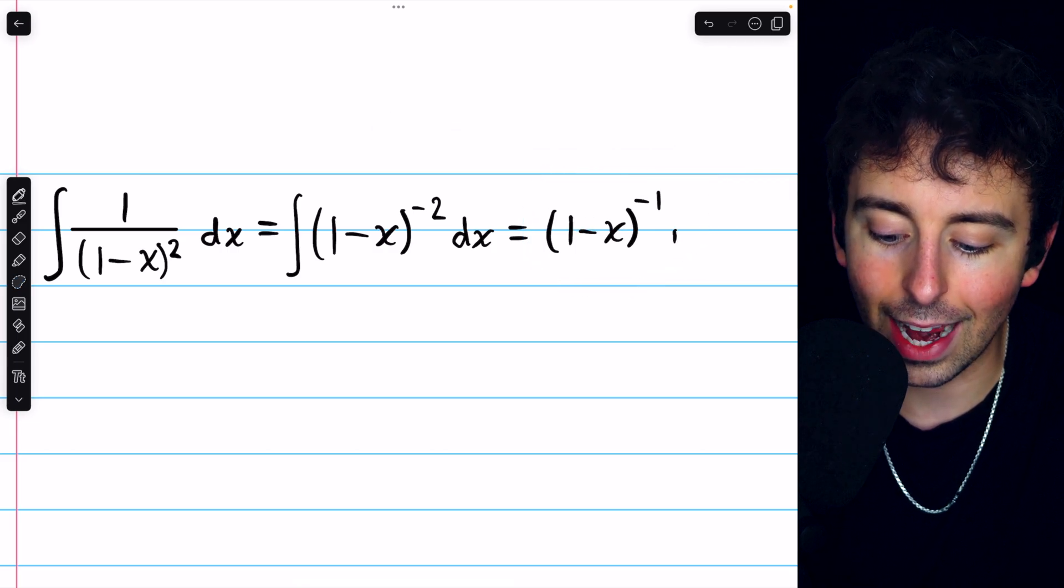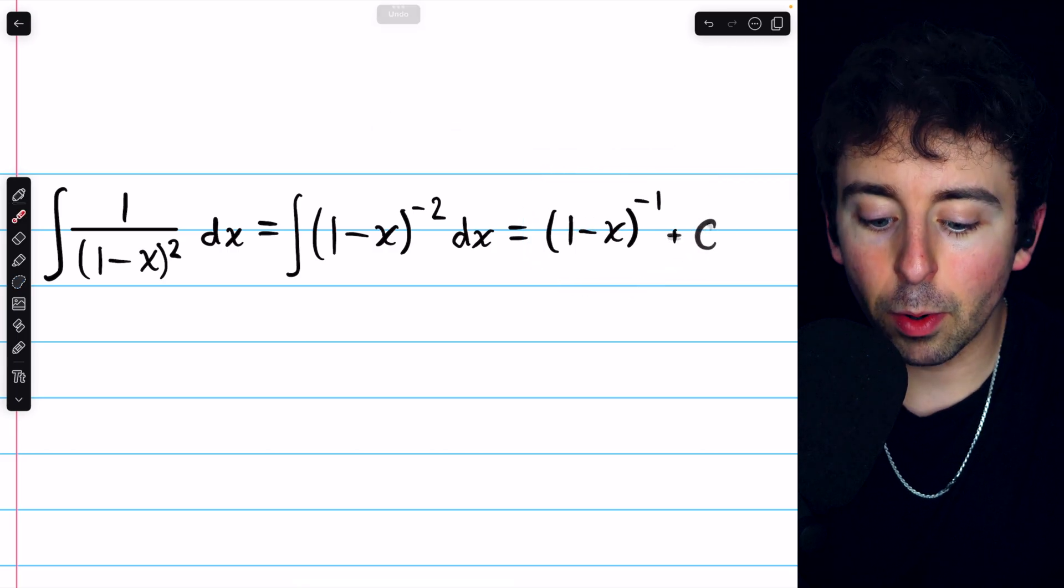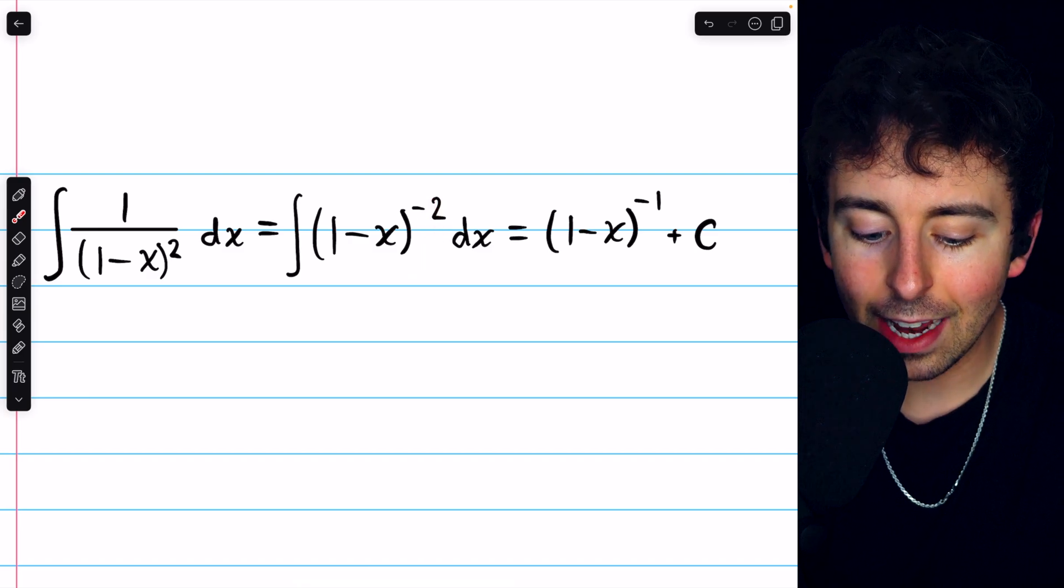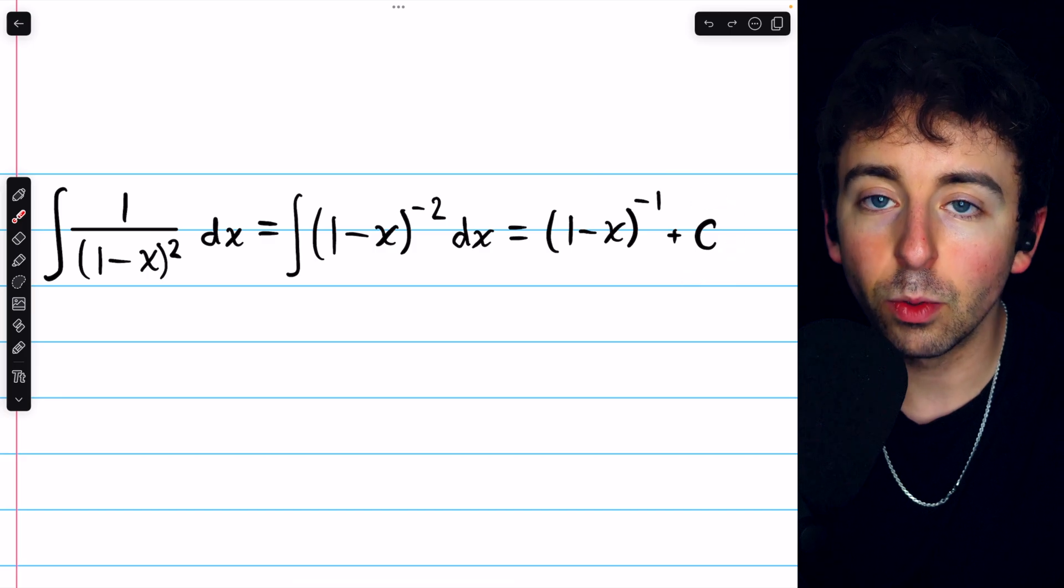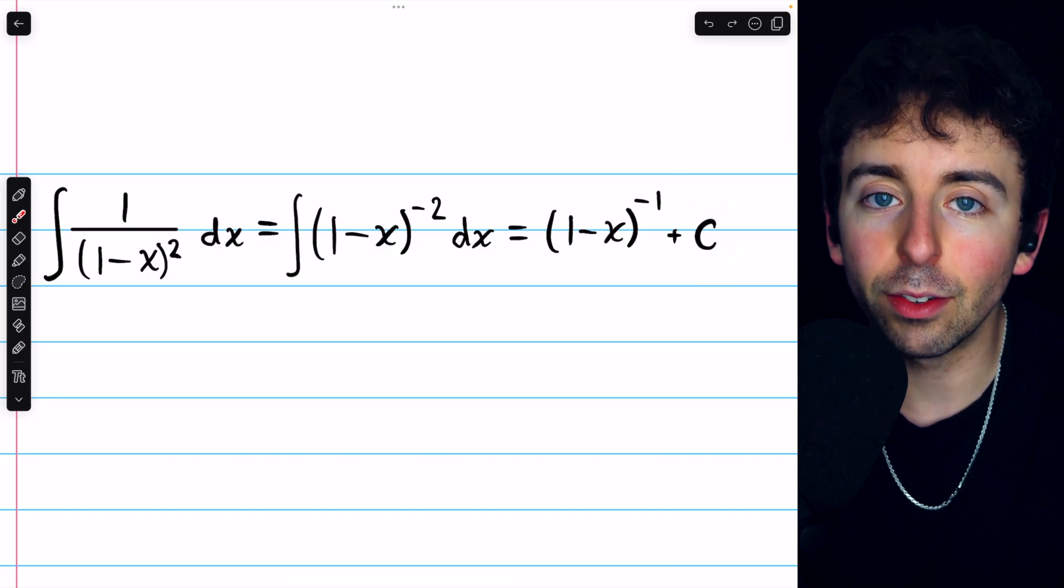We, of course, also need to add the arbitrary constant. Remember, the original integrand had no negative factor in front. And now we see if we take the derivative of this, we're going to get the integrand as we should.